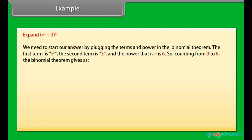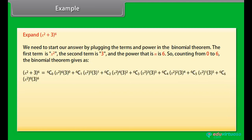Example: Expand (x² + 3)⁶. We need to plug the terms and power into the binomial theorem. The first term is x², the second term is 3, and the power n is 6. So counting from 0 to 6, the binomial theorem gives (x² + 3)⁶ = 6C0·(x²)⁶·3⁰ + 6C1·(x²)⁵·3¹ + 6C2·(x²)⁴·3² + ...